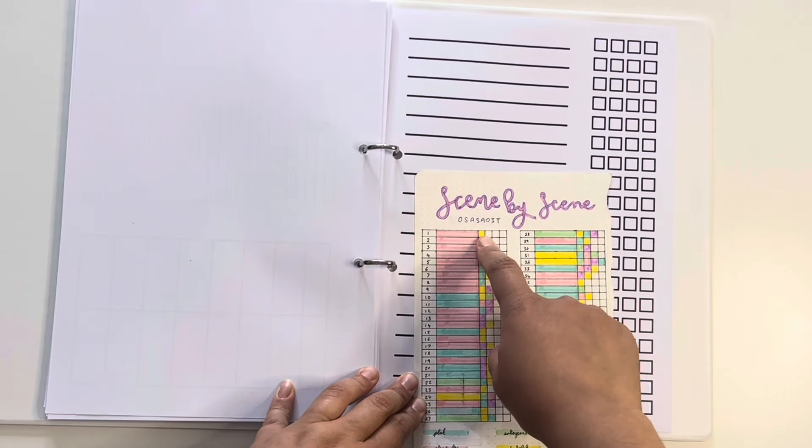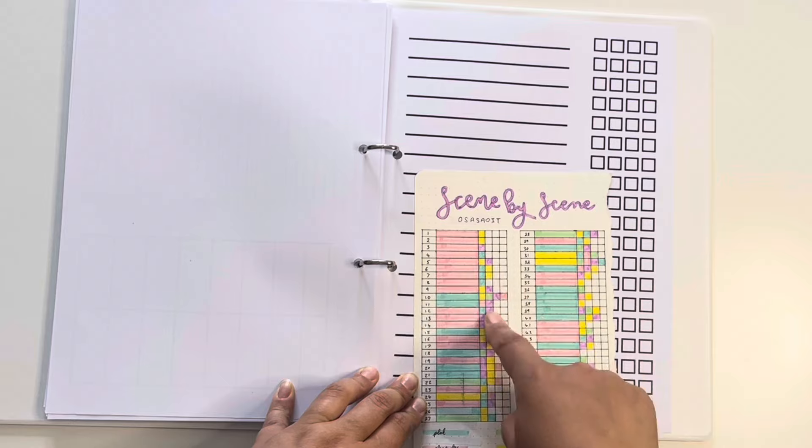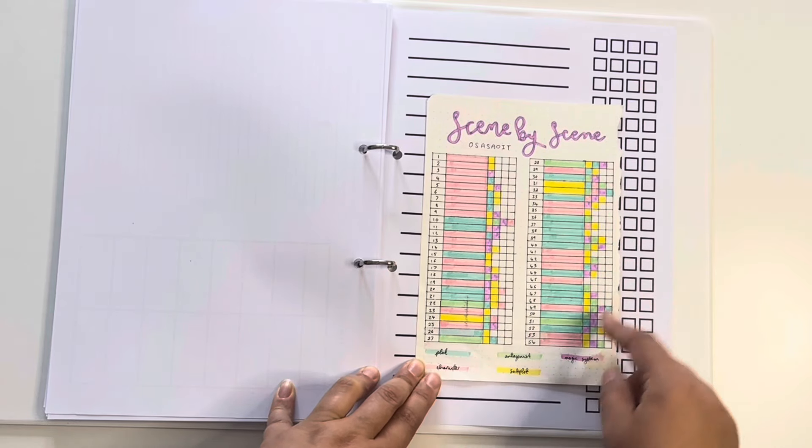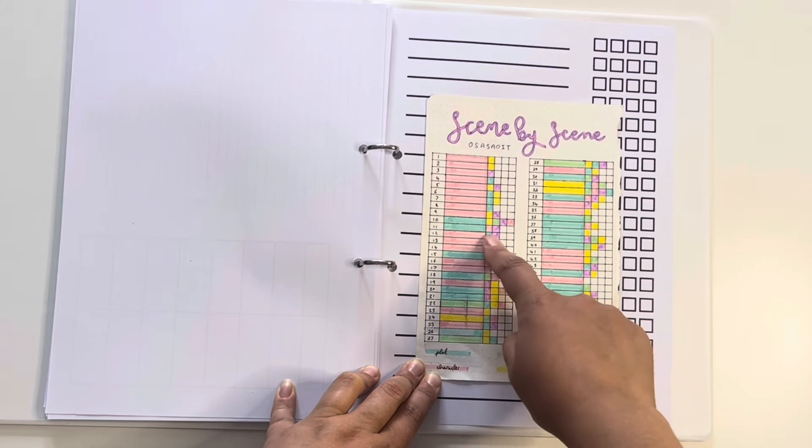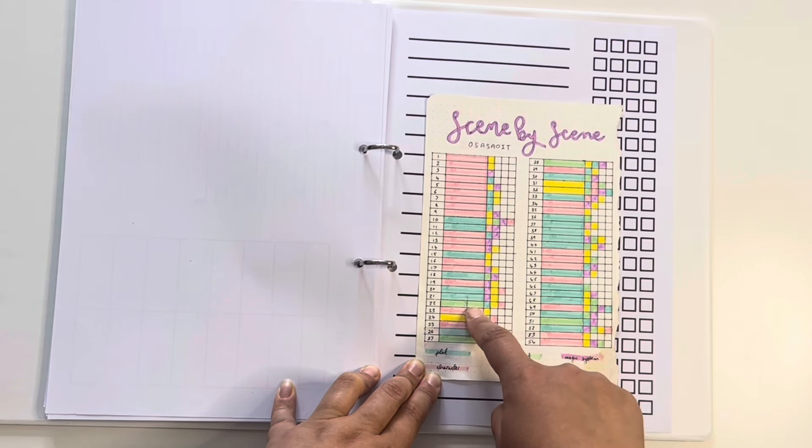And then any secondary or main points I had here. So I can see just by looking where I focus more on plot stuff, where it was mostly character, where the antagonist pops up.